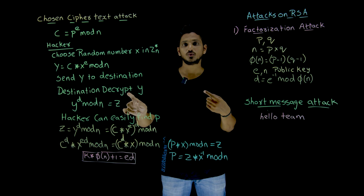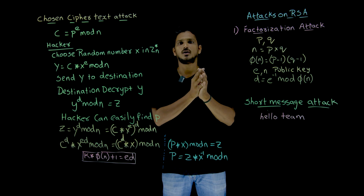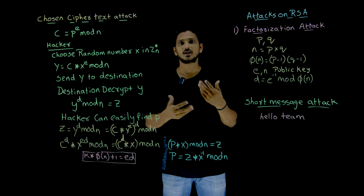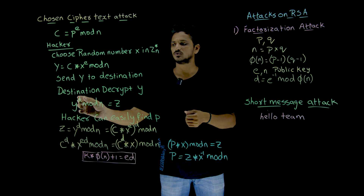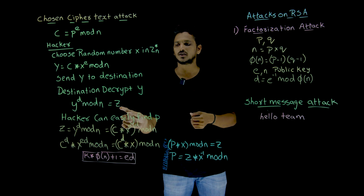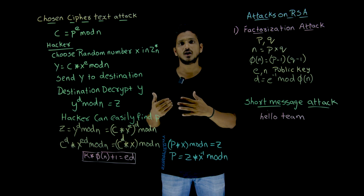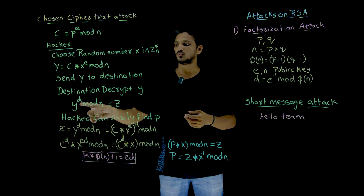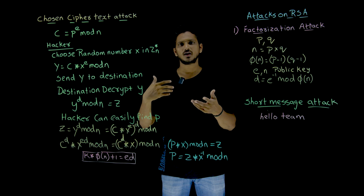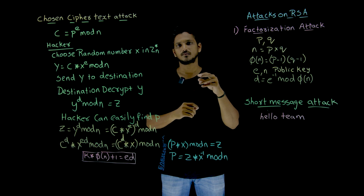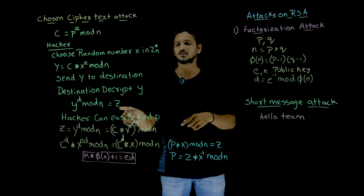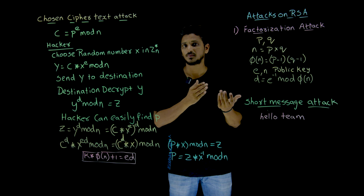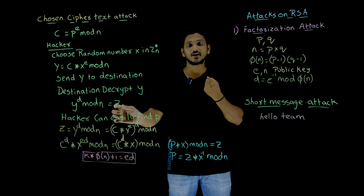The destination receives Y and performs decryption. It applies Y power D mod N, and the output is called Z. So the destination does not get the plain text directly, because we modified the ciphertext and created Y. After applying decryption on Y, you get Z. Now, if the hacker has access to the destination system, using this Z he can easily identify the plain text.